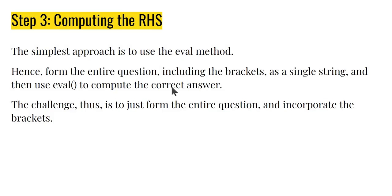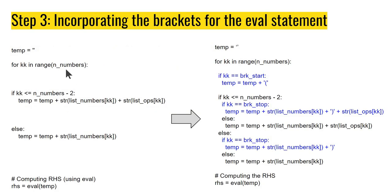Having done this, let's compute the RHS. It turns out that using the eval method is the simplest here. We can cast the entire question as a string, and use eval to calculate it. We do not have to worry about the extra logic that comes in because of the added priority of the bracket. So we are going to form the entire question including the brackets as a single string, and then just use eval to calculate the correct answer. The challenge is not in calculating this — the challenge is just to form the entire question while incorporating the brackets.